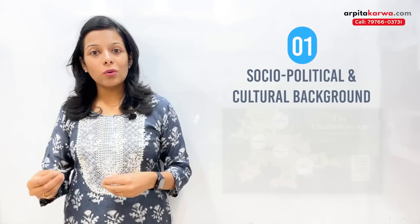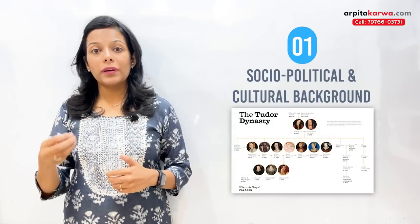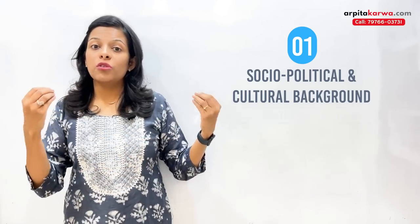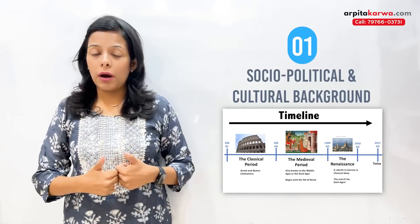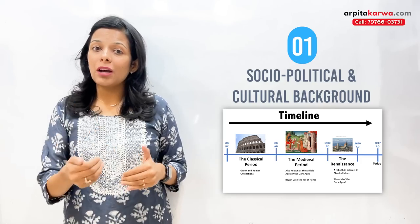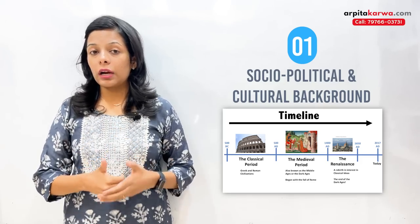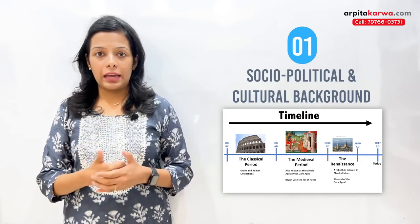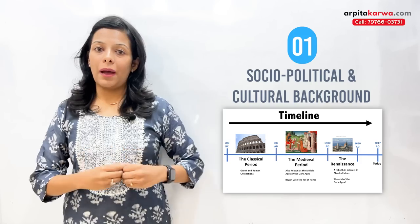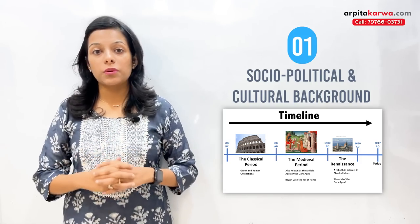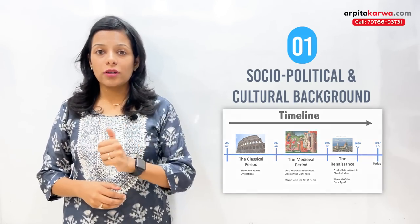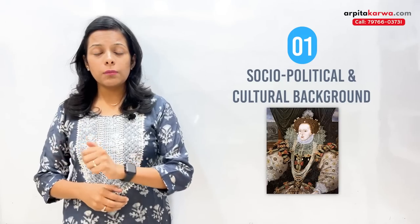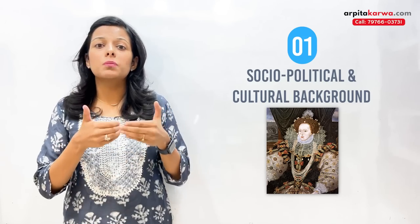For Shakespeare, you should know about the Tudor dynasty, you should know that the Renaissance was happening — what that movement was all about. You should know which king was ruling at that time and what laws were being made. You should know who Mary Queen of Scots was, who Elizabeth was, when she became queen, and what major changes she brought — because all of those things are reflected in the literary works of the period.